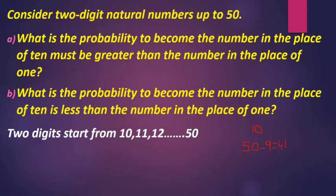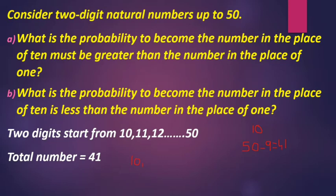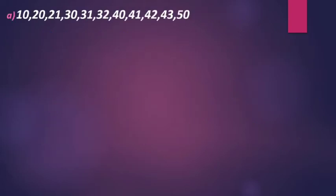Because we cannot have the same digit in both places, the count equals 41 total 2-digit numbers from 10 to 50. The value of the tens digit being 1 gives us: 10. Tens digit 2 gives us: 20, 21. Tens digit 3 gives us: 30, 31, 32. Tens digit 4 gives us: 40, 41, 42, 43, 45.